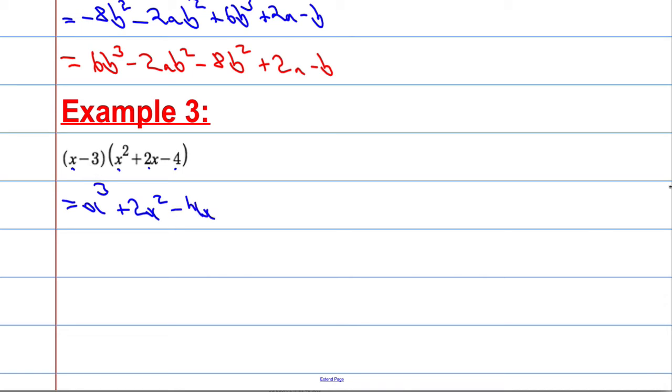Now we do second times first, it's going to give me minus 3x squared. Second times second, minus 6x. And then second times third, plus 12.